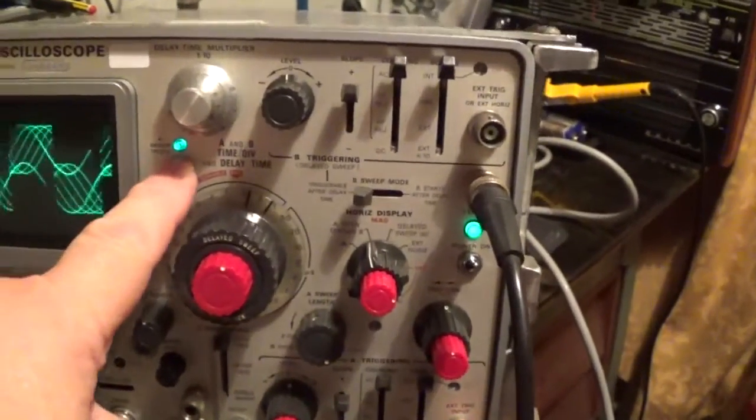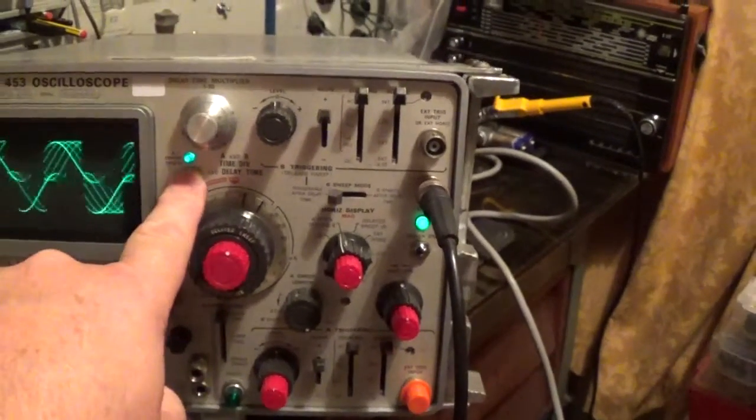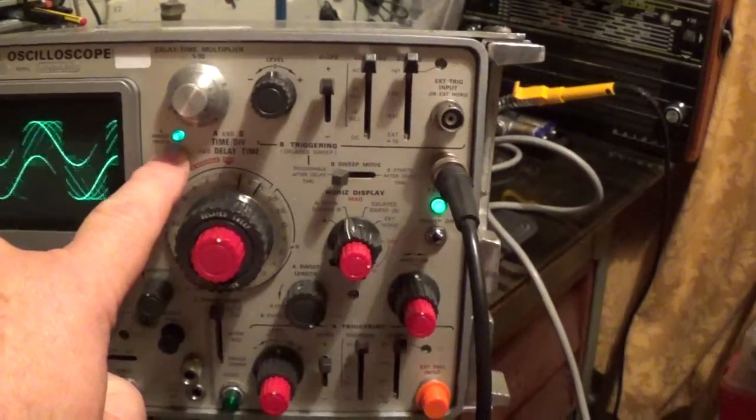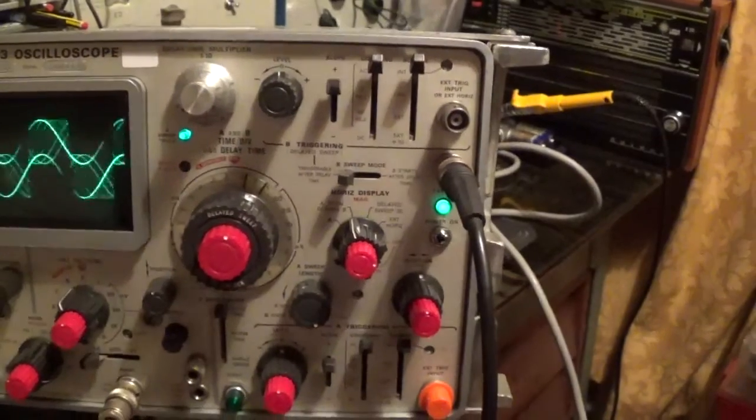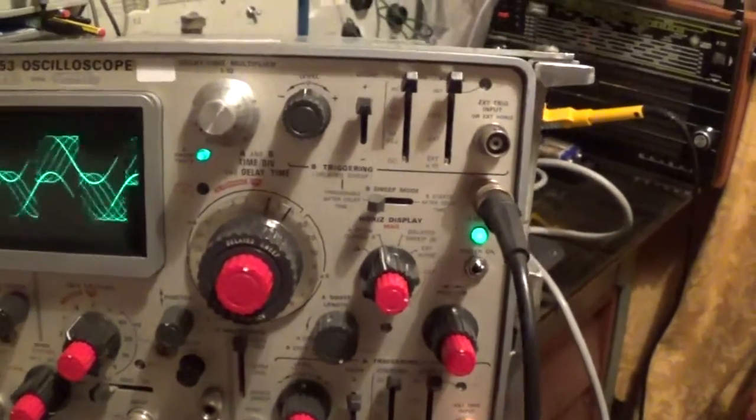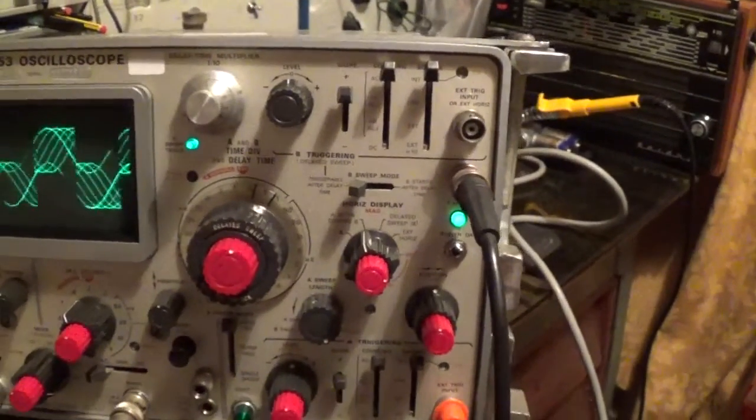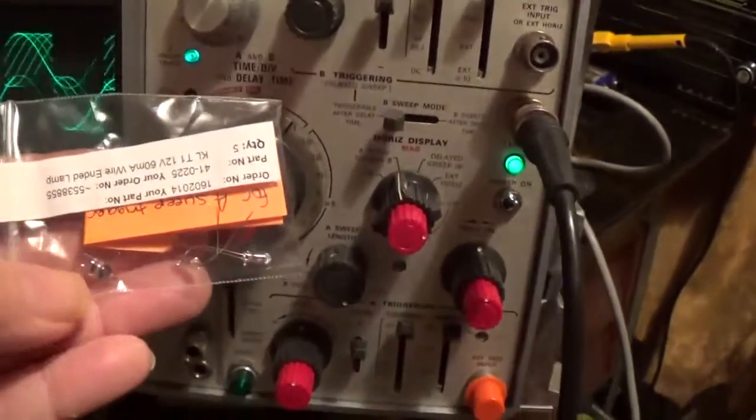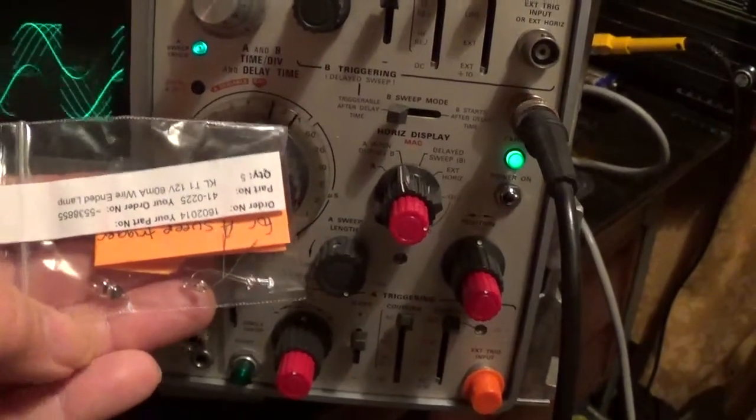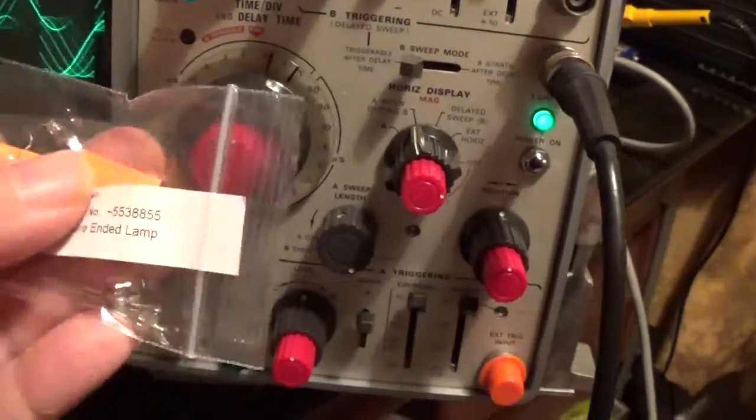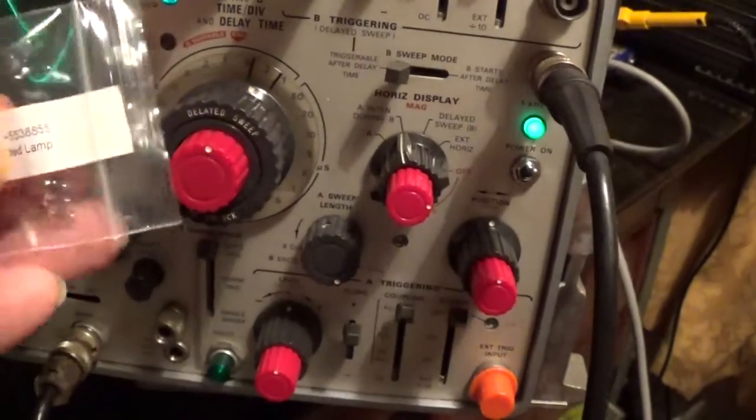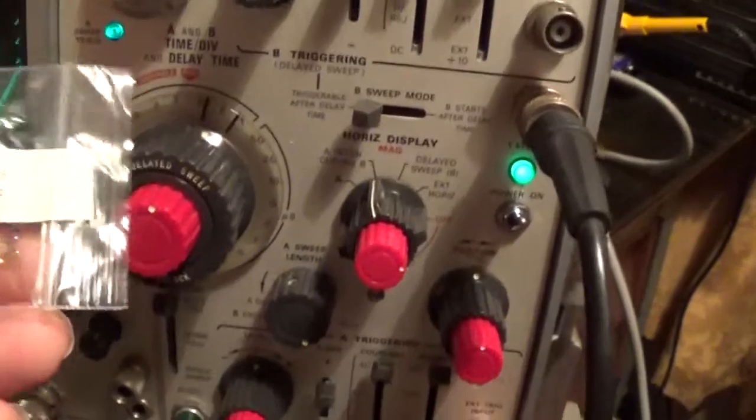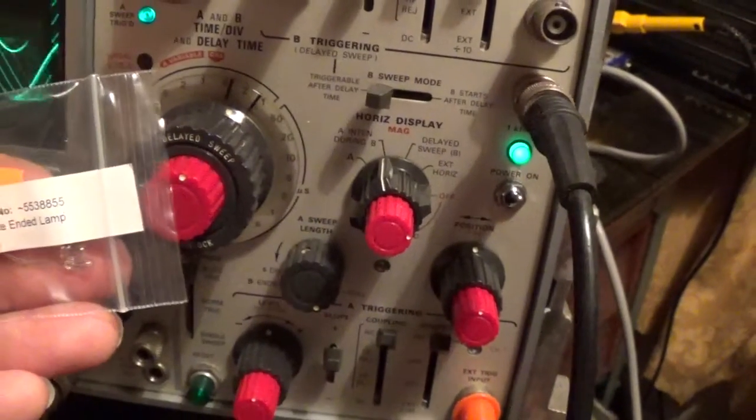Another thing I did was replace the A sweep triggered light. I noticed that wasn't working after I read the manual. The original bulb is this one here, and I managed to get some 12V 60mA wire-ended lamps which are half the size.